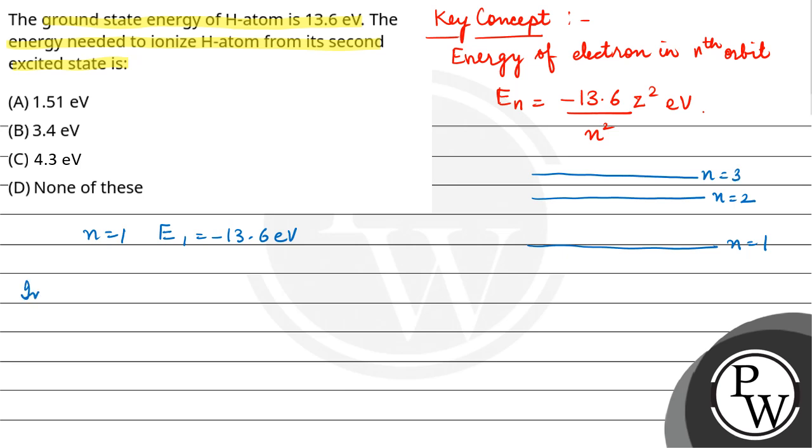So that means in the second excited state, energy E3 will be minus 13.6 upon 3 square, that is minus 13.6 upon 9, which equals minus 1.51 electron volt.